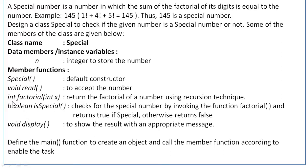The recursive function int factorial(int x) returns the factorial of a number using recursion. This function alone will be recursive — it finds the factorial of the given parameter and returns the value. Then there is boolean isSpecial(), which checks for the special number by invoking the factorial function.